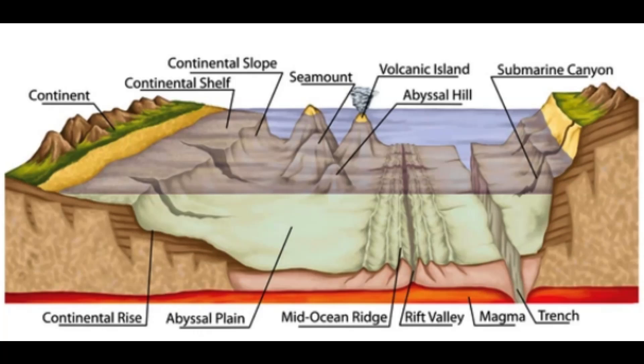The Atlantic Ocean Basin is the second-largest ocean basin and is located between the Americas to the west and Europe and Africa to the east. It is connected to the Arctic Ocean in the north and the Southern Ocean in the south. The basin is known for its mid-oceanic ridge system, which includes the prominent Mid-Atlantic Ridge. This ridge marks a divergent boundary where new oceanic crust is formed, and it plays a significant role in the process of seafloor spreading.